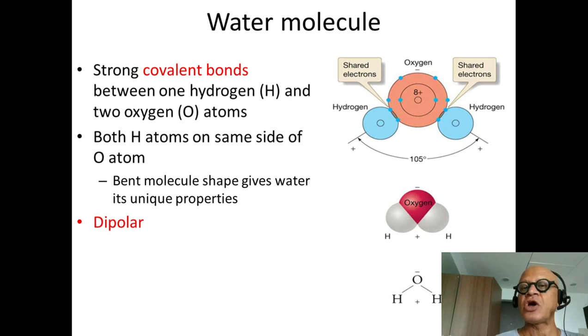And no matter where the hydrogen atoms end up attaching to the oxygen atom, this lone pair will always end up pushing the hydrogens to one side. And that's how you end up with this bent shape.